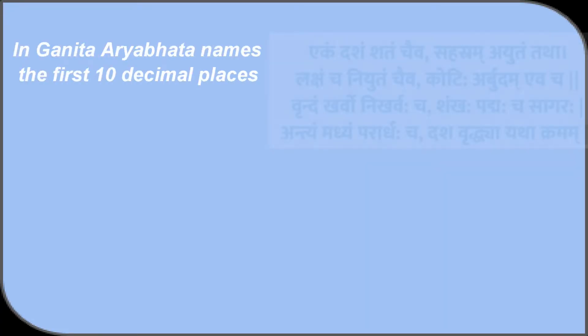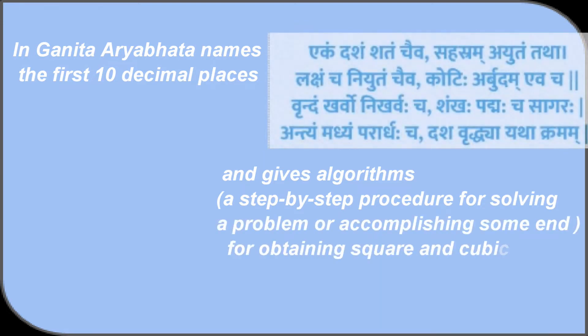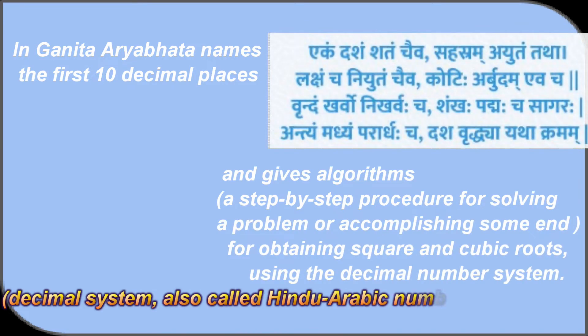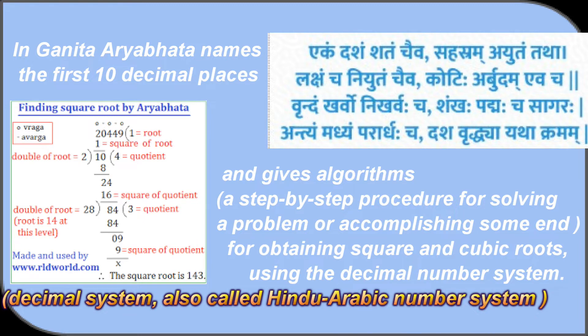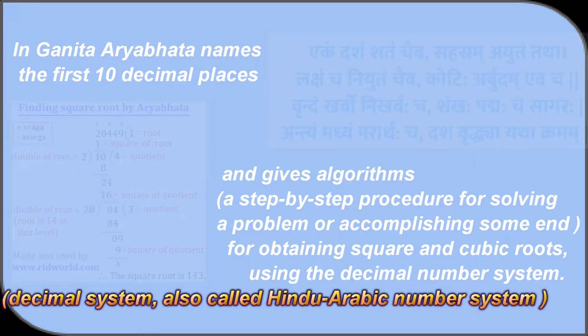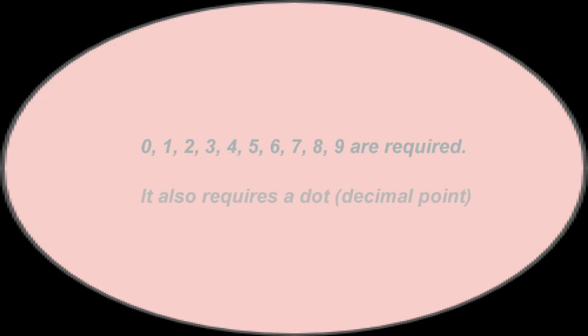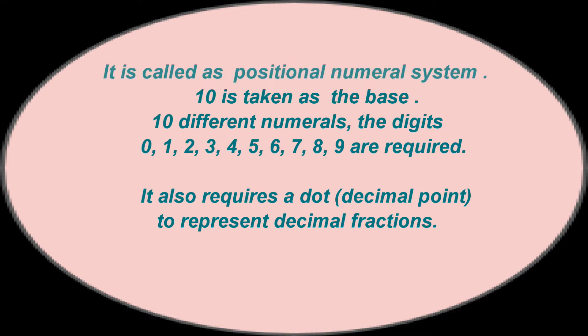In Ganita, Aryabhata names the first 10 decimal places and gives algorithms, a step-by-step procedure for solving a problem or accomplishing some end, for obtaining square and cubic roots using the decimal number system. The decimal system, also called Hindu-Arabic number system, is called a positional numeral system. 10 is taken as the base.